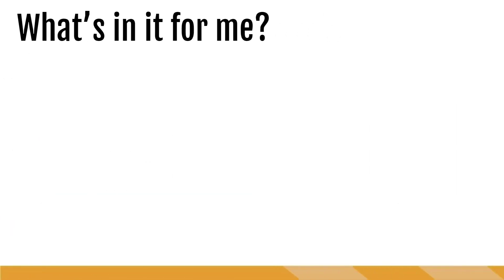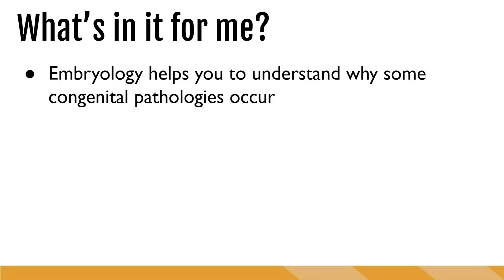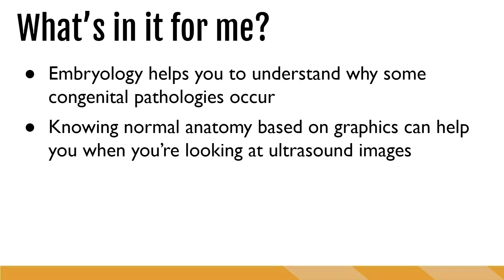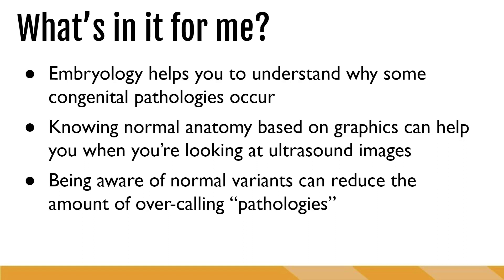We know it's important to learn anatomy, but let's talk about what's in it for you. First, we really need to know embryology of the thyroid because that's going to help us understand why some congenital pathologies occur. It's also important that we know the normal anatomy based on graphics, so when we get into ultrasound images we can recognize the relational anatomy. Being aware of normal variants can really reduce the amount of overcalling pathologies — we need to know if something is a true pathology or just a common normal variant due to the way the organ developed.